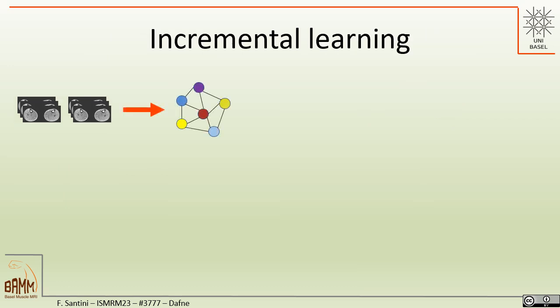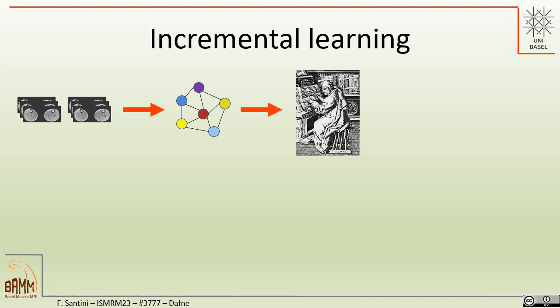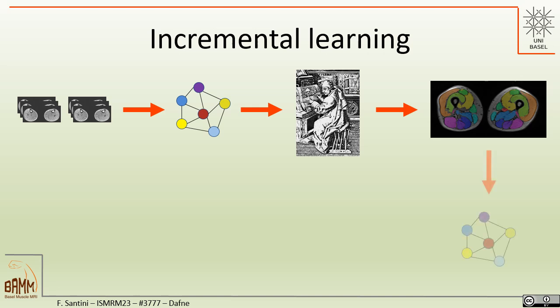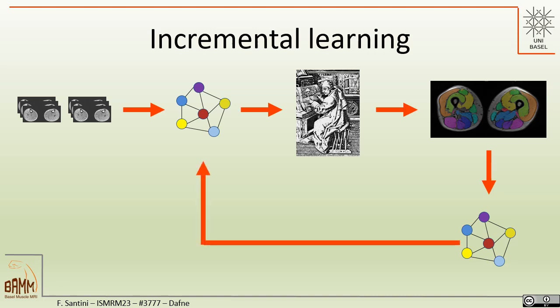What we advocate for is a continuous incremental learning approach where we start with a small pre-trained model on very few datasets, which is then already deployed to the user. The user checks and refines every segmentation from this initial model, and with this refined segmentation we can improve the model through incremental learning. This improved model can then be made available again to the next user, who will build upon what has been done by the previous one.